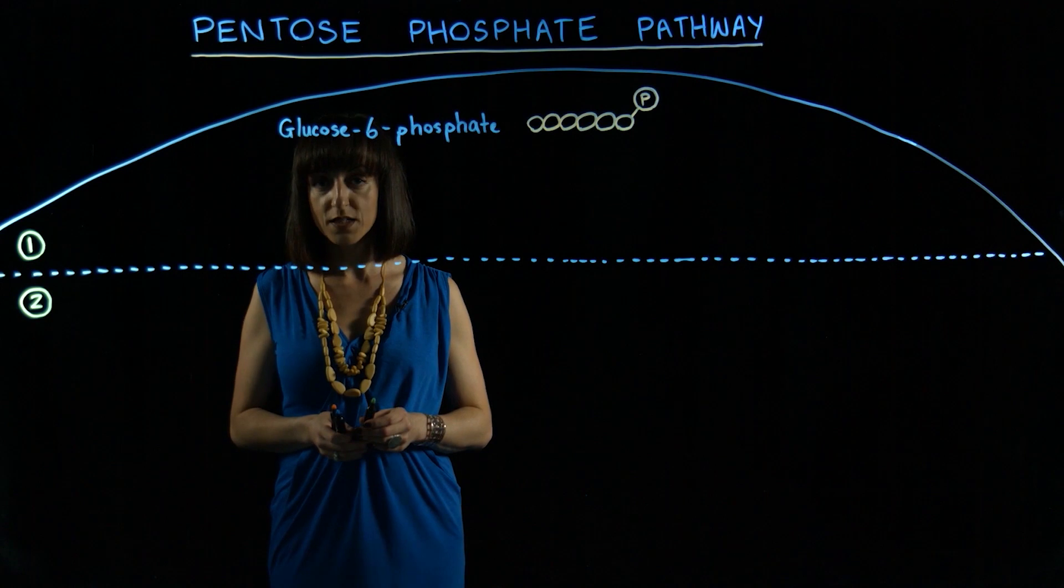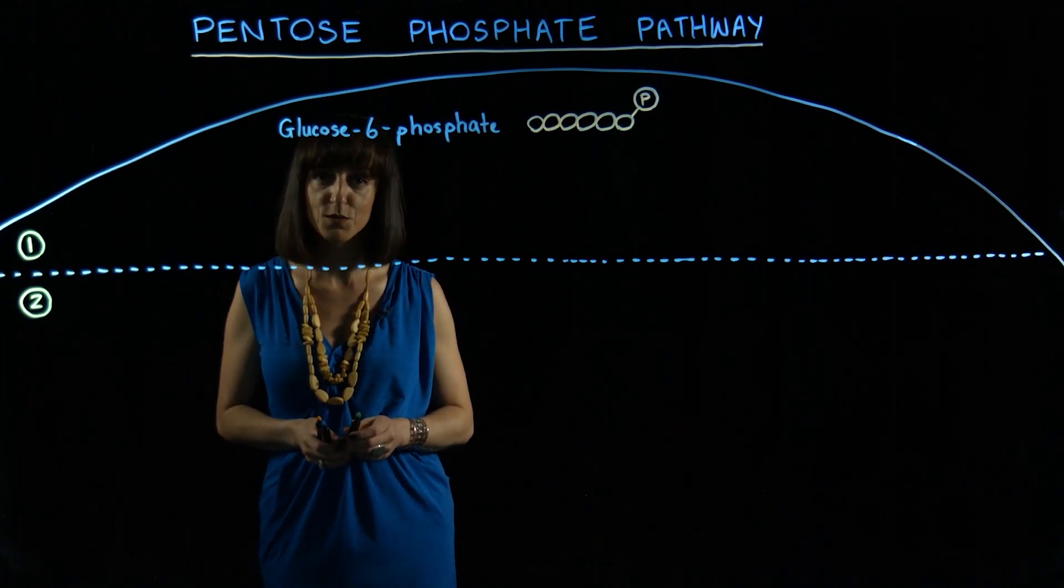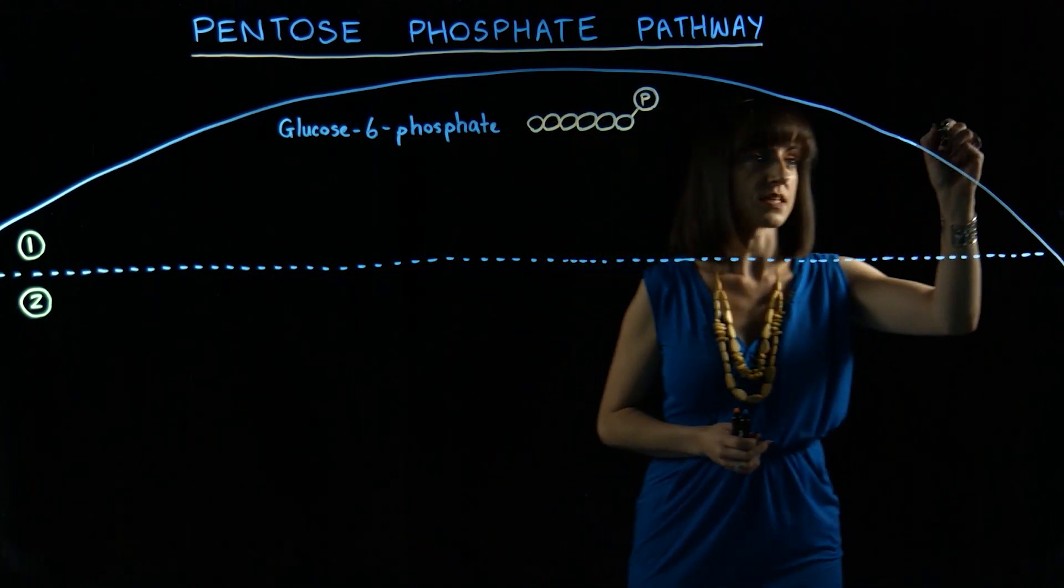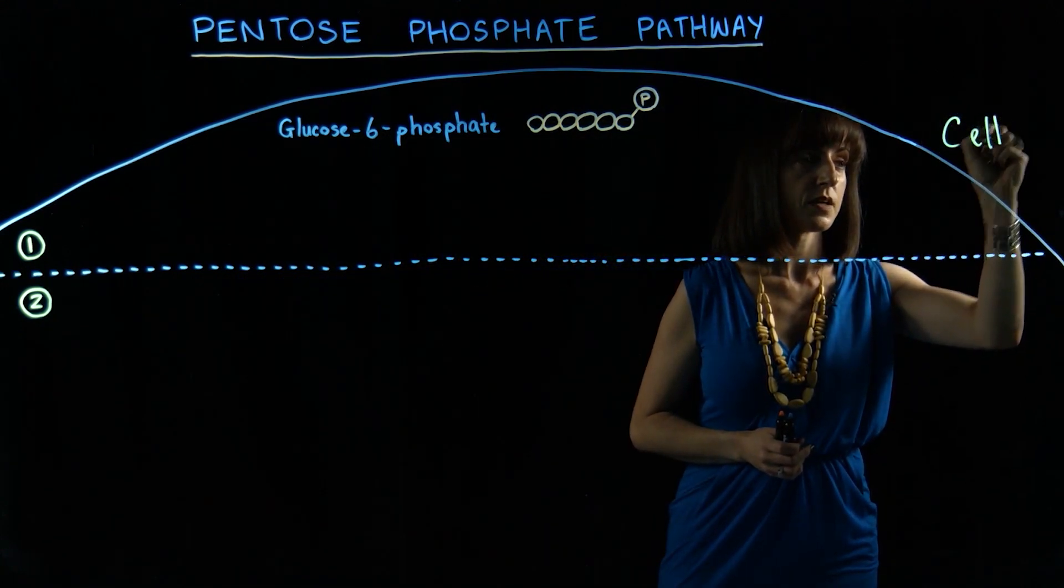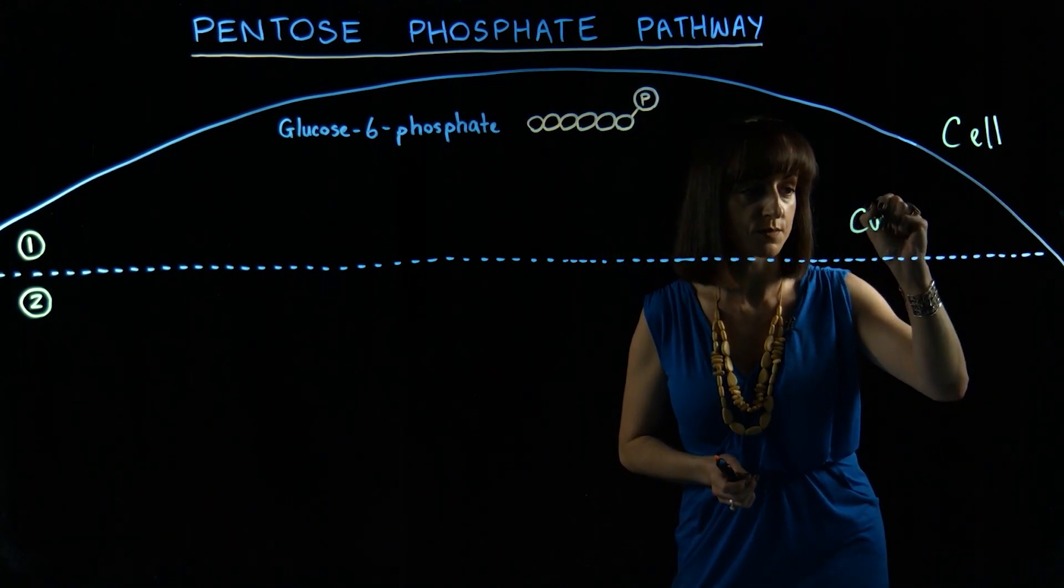Now I'm going to talk to you about the pentose phosphate pathway in more detail. Firstly, the location of the pathway. So if this is our cell, the pentose phosphate pathway occurs inside the cell in the cytosol or cytoplasm.